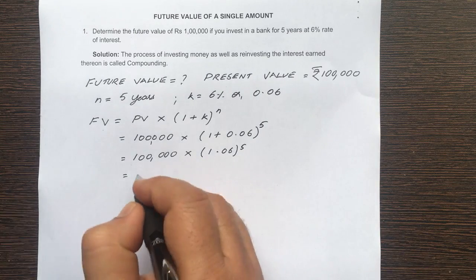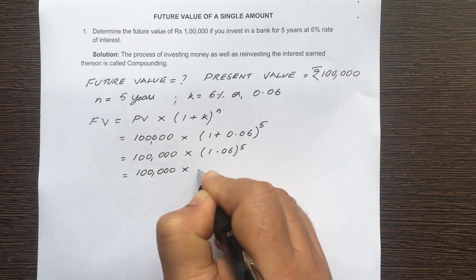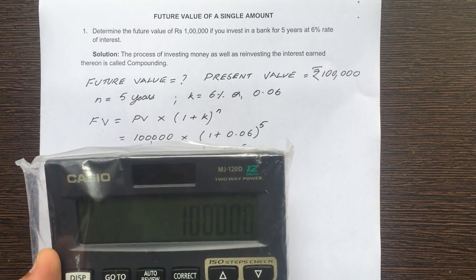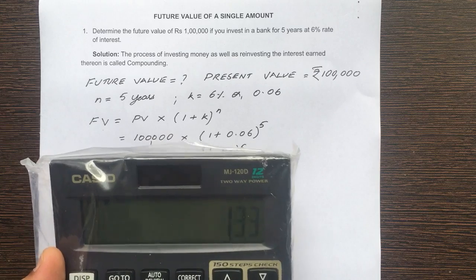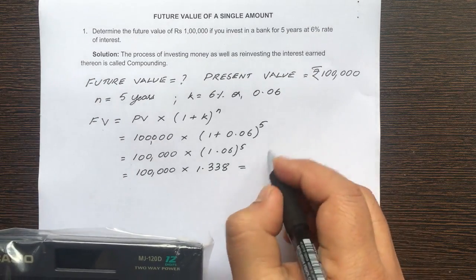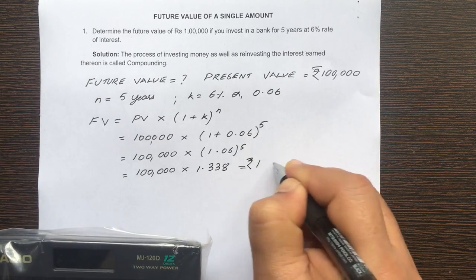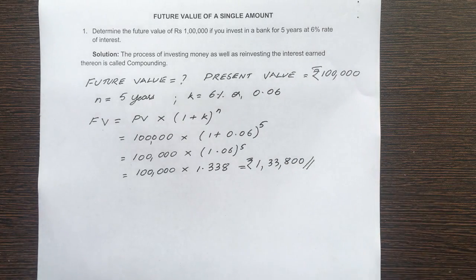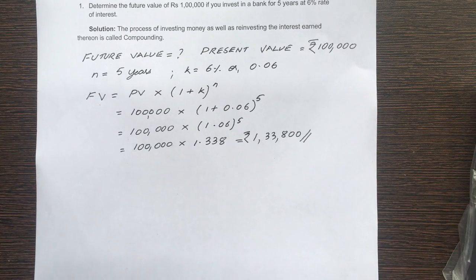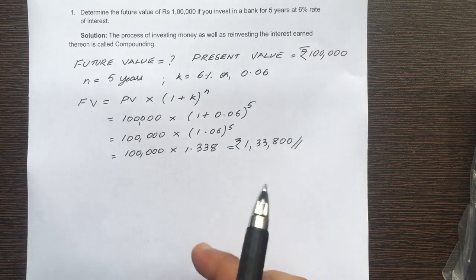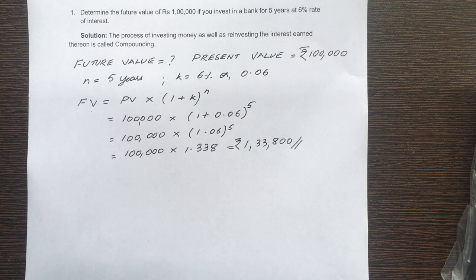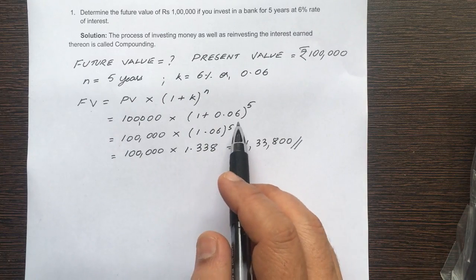So 1 lakh into 1.338 is equal to 1 lakh 33,800. Now that is your answer. That is the normal way of solving this kind of problem. If you see n is only 5 years, so it is really not cumbersome to find out the future value interest factor because you have only 5 years.